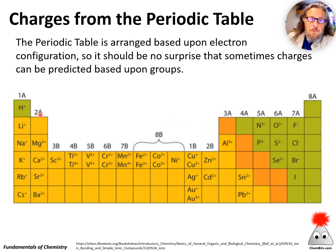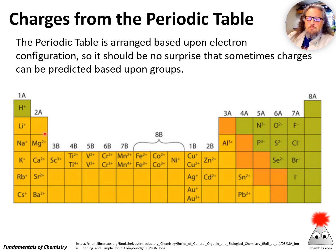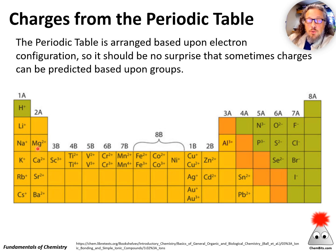We can use the periodic table to predict a bunch of these charges. Lithium and all the other elements in the same column have one valence electron more than a full shell, so they can all lose one valence electron and carry a plus one charge. The next column over — beryllium, magnesium, calcium, strontium, barium — all have two valence electrons; losing those gives a stable noble gas configuration and a plus two ion.